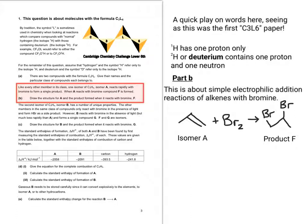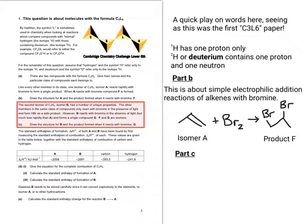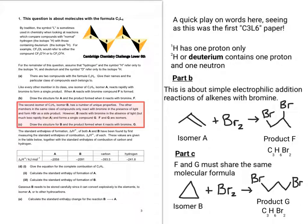Okay. So it starts talking about the second isomer of C3H6. And what it says here is that this particular isomer has a number of unique properties. And the other members in the same class of compounds only react with bromine in the presence of light and form HBr as a side product. So it's not an addition reaction in the same sense that we've just looked at. And it says that B reacts with bromine in the presence of light but much less rapidly than A and forms a single compound, G. F and G are isomers. So that means you can deduce that F and G would share the same molecular formula. So taking that logic forward, you can work out that product F and product G are both C3H6Br2.